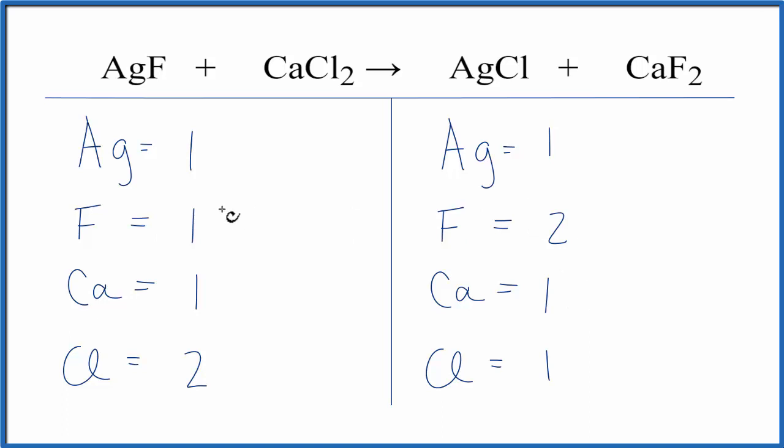Let's fix the fluorines first. If we put a 2 in front of the AgF, this applies to the whole thing. So we have 1 Ag times 2, that gives us 2 Ags. And then the F, 1 times 2, we have 2 fluorines. So we fix the fluorines.